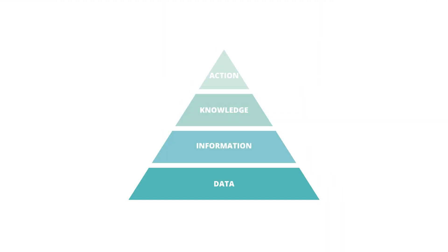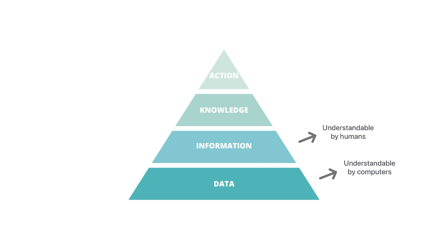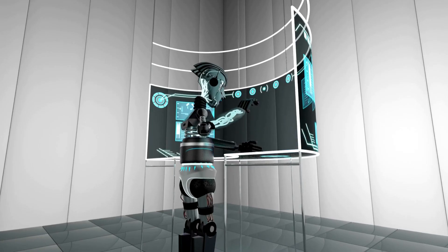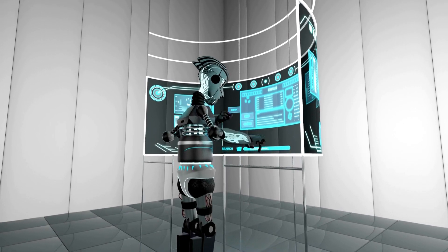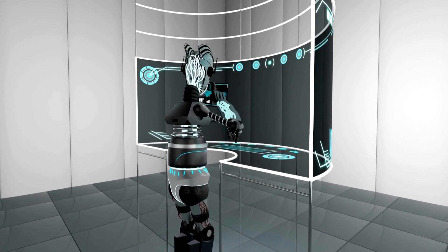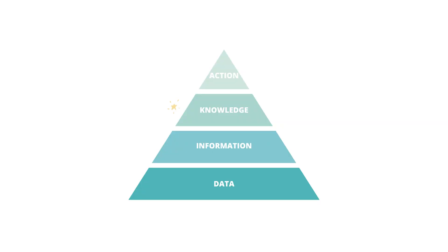Here's something very interesting — what is called the data-to-action pyramid. This involves analysis and data visualization to transform data elements from being readable by computers — that's the bottom part of the pyramid. Tables and graphs then transform the data into information easily understood by humans. Visualization principles and everything discussed in this video highlights key pieces of that information to create knowledge and spark action. To move up the data-to-action pyramid, we must understand how we process information.